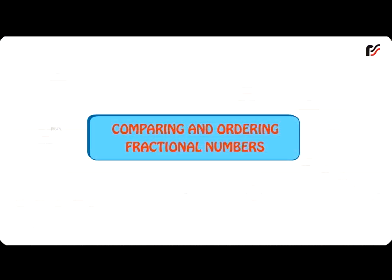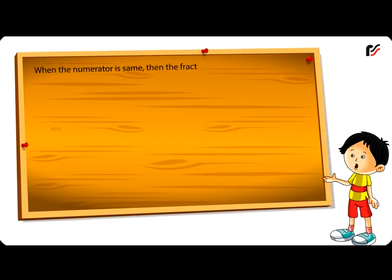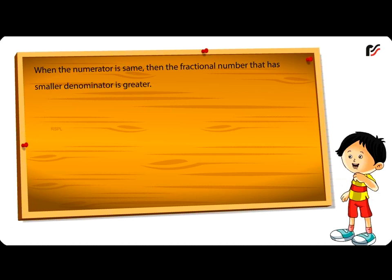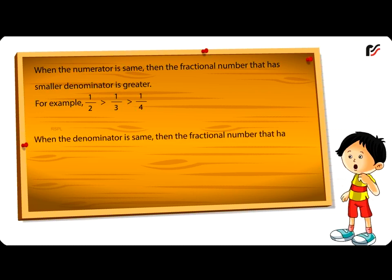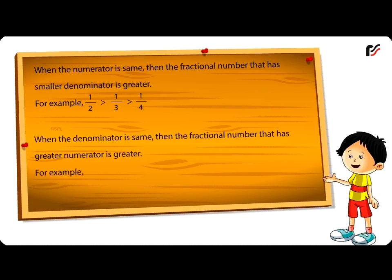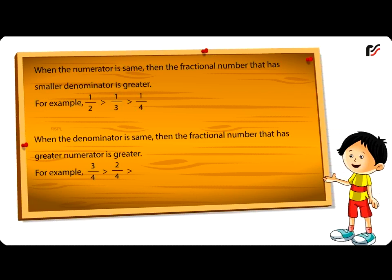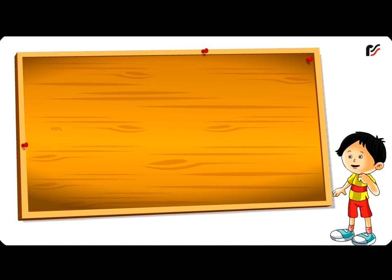Comparing and ordering of fractional numbers. When the numerator is the same, the fractional number with the smaller denominator is greater. For example, 1 by 2 is greater than 1 by 3, which is greater than 1 by 4. When the denominator is the same, the fractional number with the greater numerator is greater. For example, 3 by 4 is greater than 2 by 4, which is greater than 1 by 4.